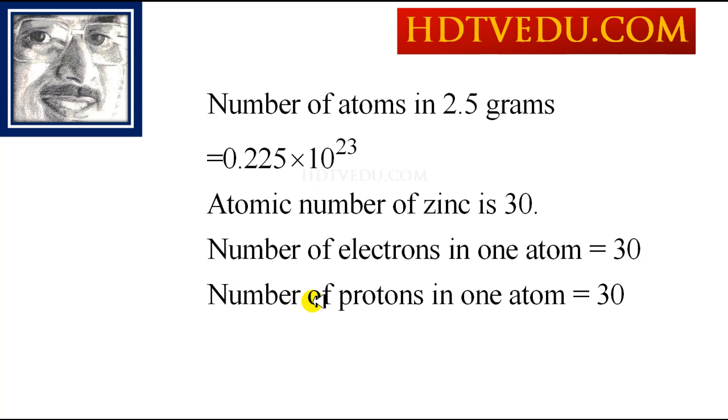That's how many atoms you have. Each atom has 30 electrons. So multiply the number of atoms by 30 and you get the total number of electrons. And multiply that number by the charge carried by the electron and you get the total charge in coulombs.